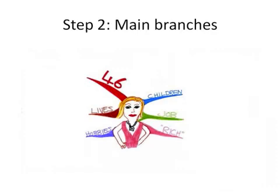The next step is to add main branches which organise your ideas about your subject. I'm doing a mind map about Chrissy and Chrissy's life. The key branches I've used about her life are her children, her job, her husband Rich, her hobbies, where she lives, and then finally the last branch in the top left corner is her age.